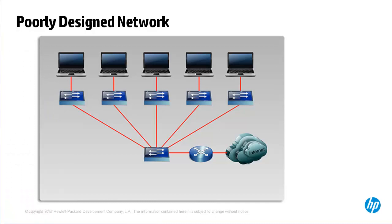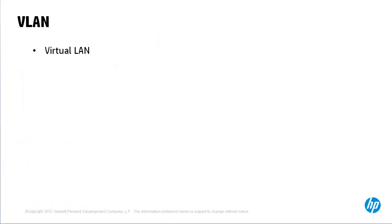Here's another example. If this core or central switch went down, devices would not be able to communicate with one another. In networks, it's good practice to implement redundancy — you want to avoid a single point of failure, which you have with this design.